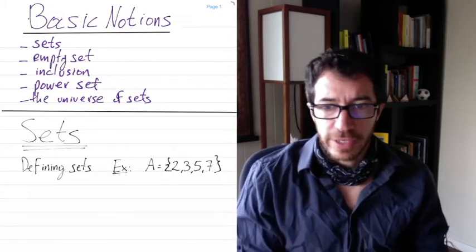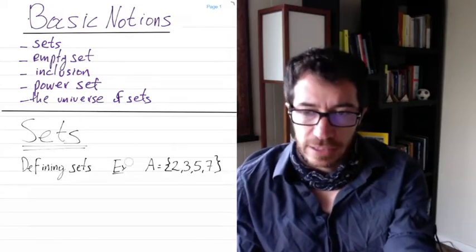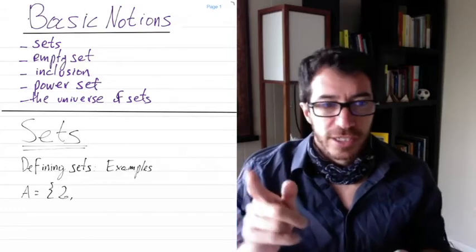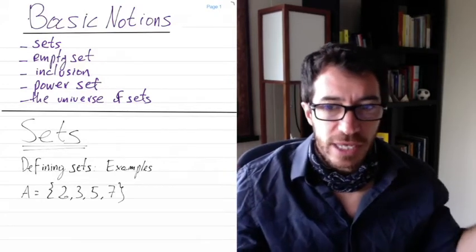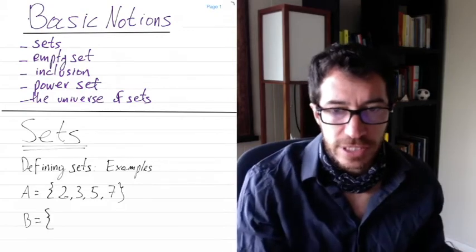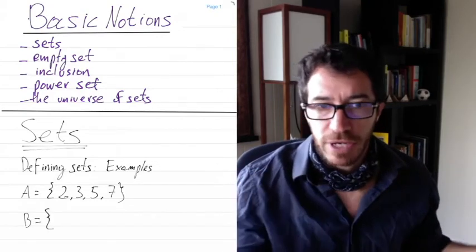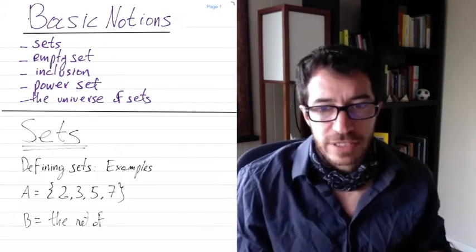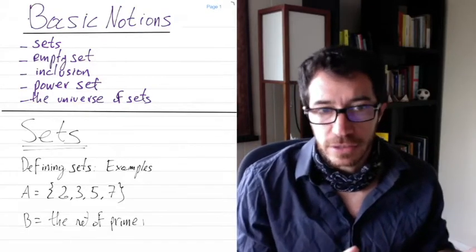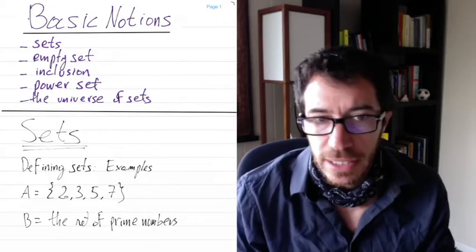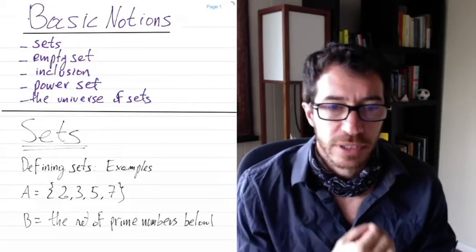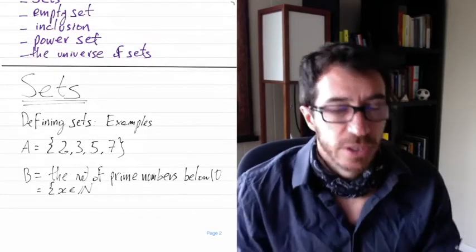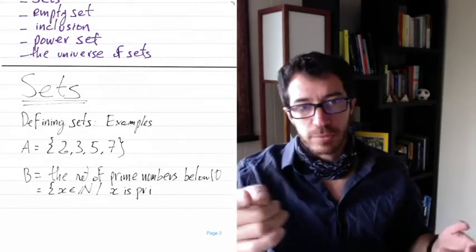The most classical way to define a set is by listing all its elements. So just list all the elements and now you have a set. For instance, set A contains the elements 2, 3, 5, 7. Another way is by describing it - for instance, B is the set of all prime numbers which are below 10. That's a description of B by describing what the elements look like.